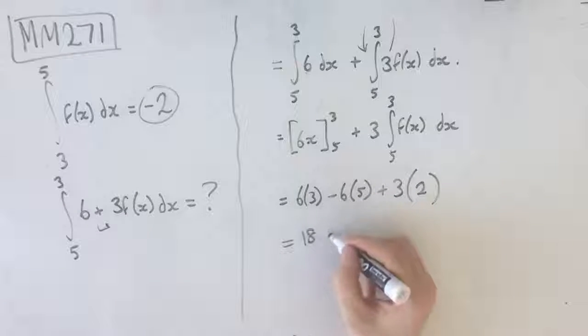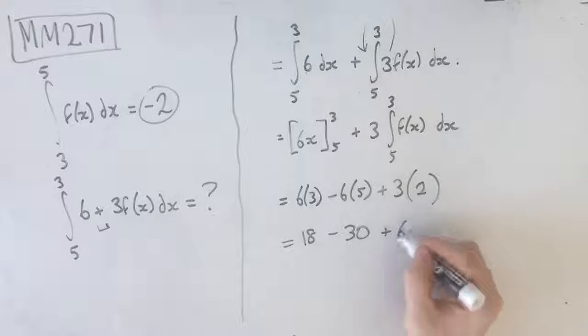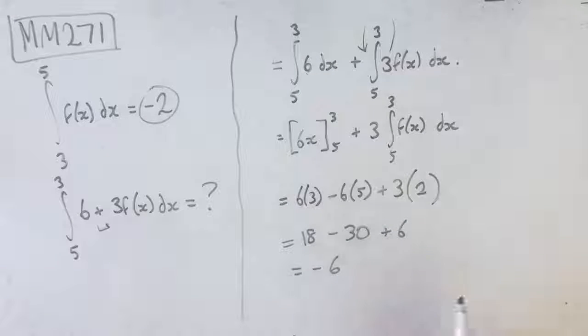6 times 3 is 18, 6 times 5 is 30, 3 times 2 is 6, which gives us -6.